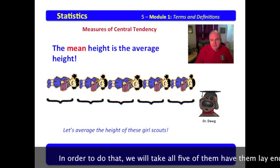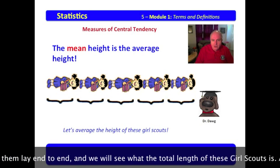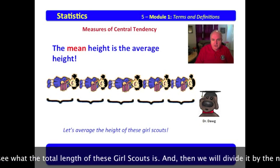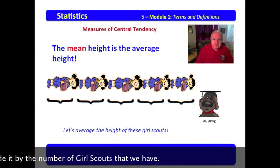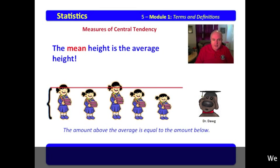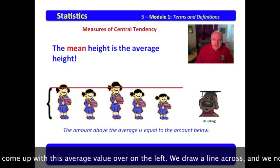Now let's average the height of these Girl Scouts. In order to do that, we will take all five of them, have them lay end to end, and we will see what the total length of these Girl Scouts is. And then we will divide it by the number of Girl Scouts that we have.